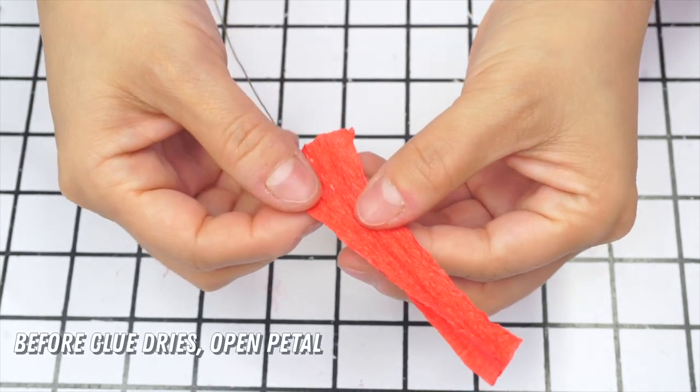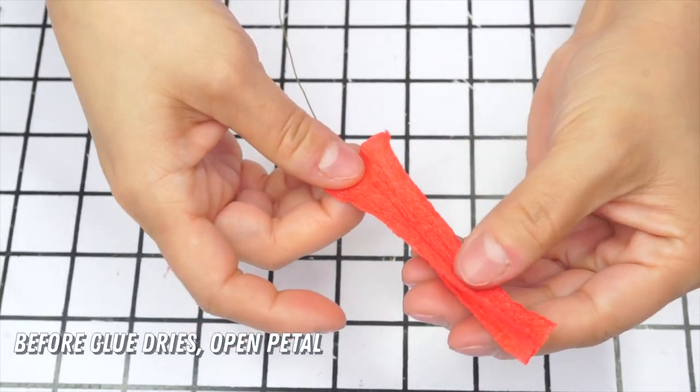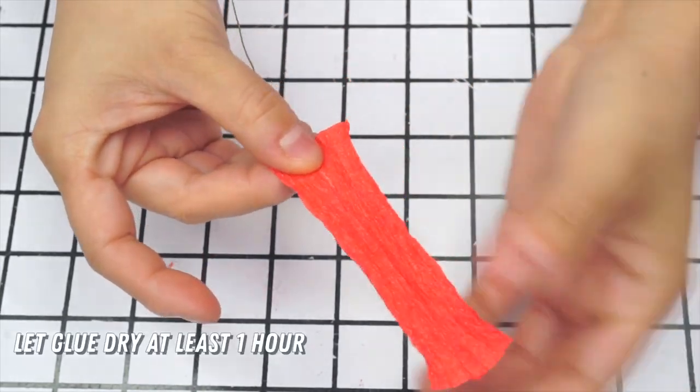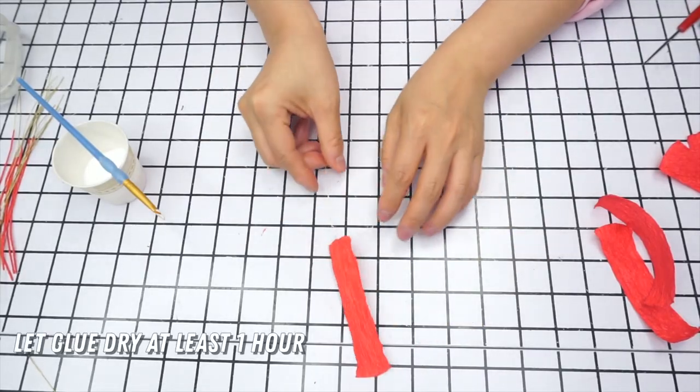Before the glue dries, fold open the paper enough to hide the wire in the middle. This is the trick here. Press smooth and set aside the paper for the glue to dry.